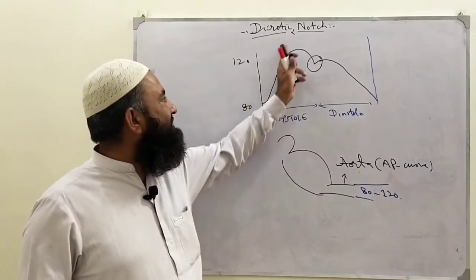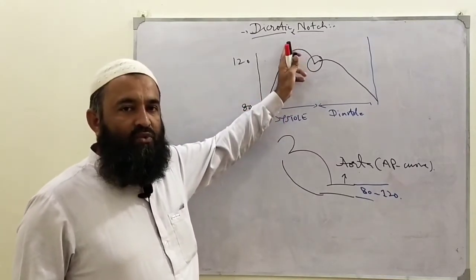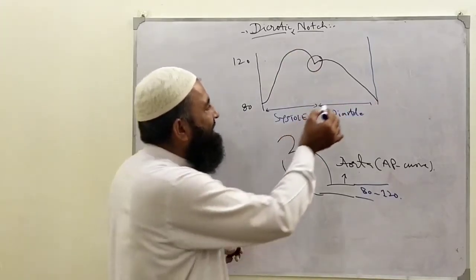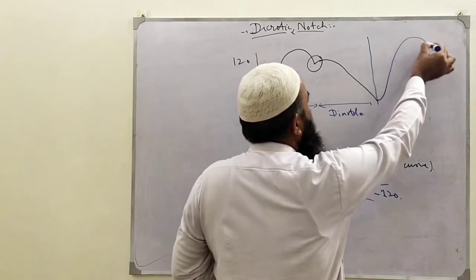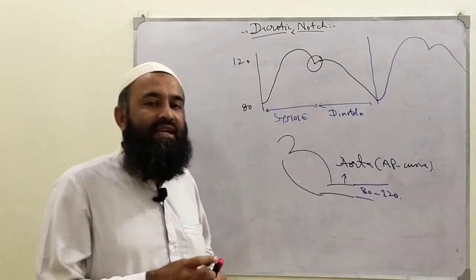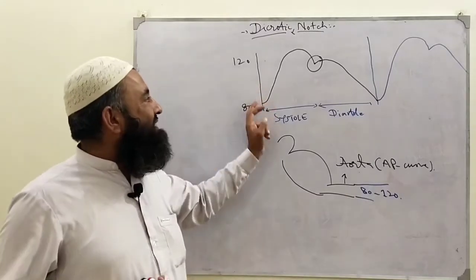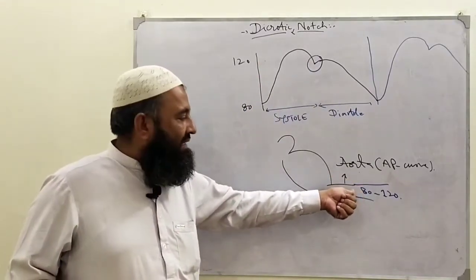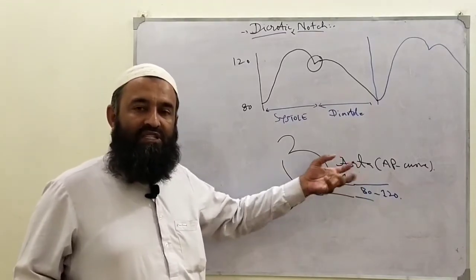80 is minimum pressure. It will rise and reach a peak level up to 120, then come back to minimum level 80. Then again for the next cycle it will go like that, then again decrease. This repeats again and again. This curve shows changes in the pressure of the aorta, the pressure of the blood inside the aorta.